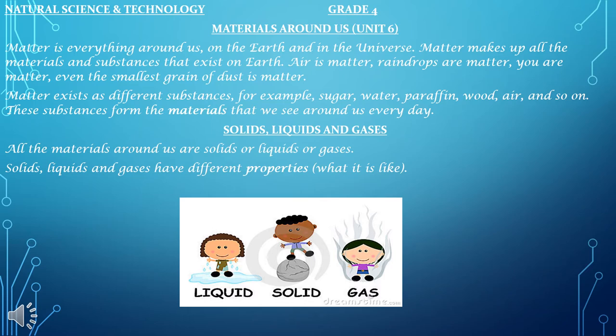Even though matter can be found all over the universe, you will only find it in a few forms on earth. These are either solids, liquids or gases. Solids, liquids and gases have different properties. When we talk about a property of something, we are talking about what something is like.